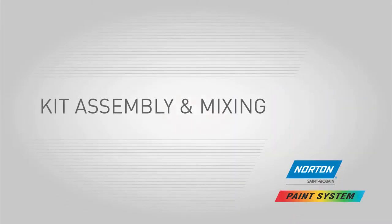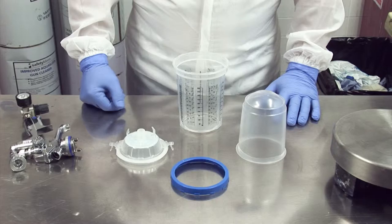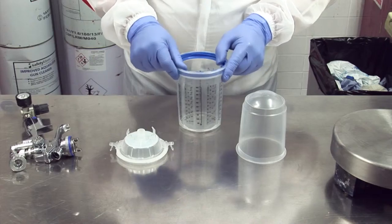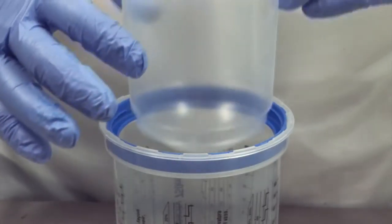Kit assembly and mixing. Select the cup size you need based on the area being sprayed. Put the ring into the cup and slot it into place. Fit the liner into the ring.